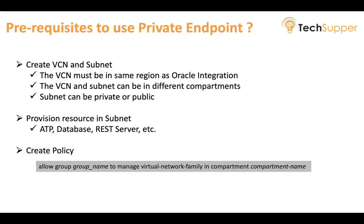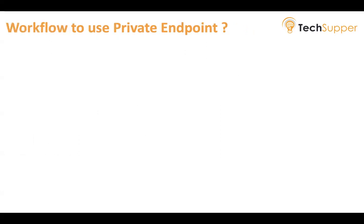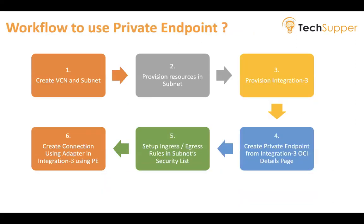What is the workflow to use private endpoint? First, create a Virtual Cloud Network and subnet — if you already have one, you can skip this step. Second, provision resources in the subnet — if you already have ATP, REST resources, or a database in the subnet, you can skip this step too. Third, provision an Oracle Integration 3 instance — if you already have one, you can skip this as well.